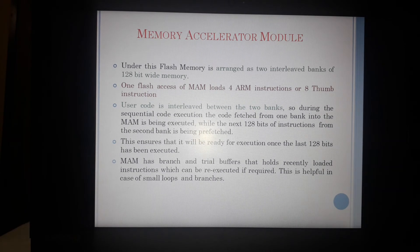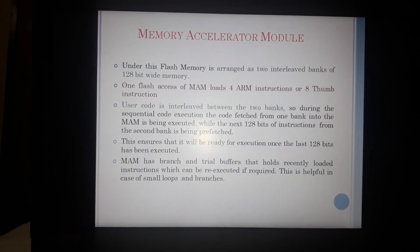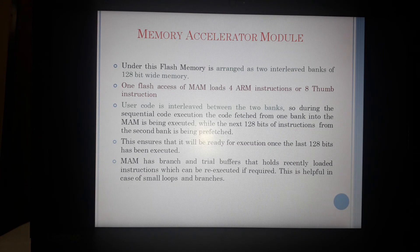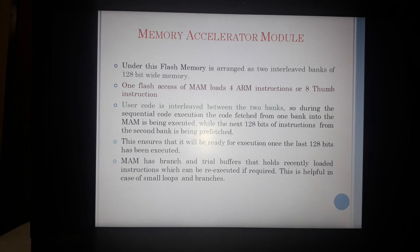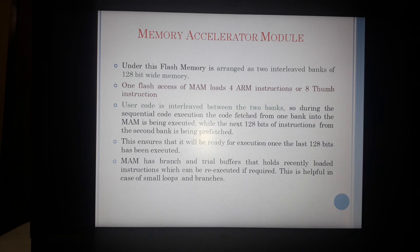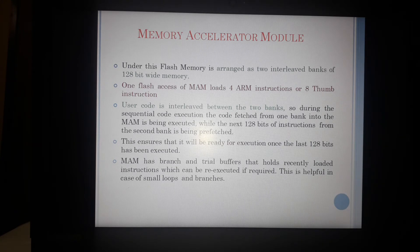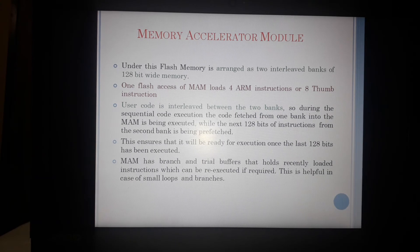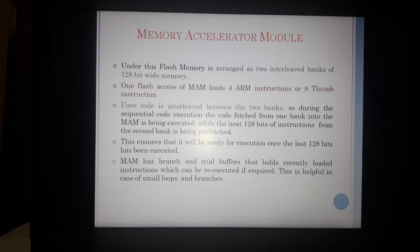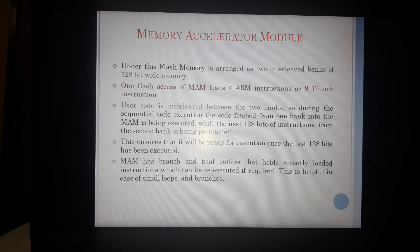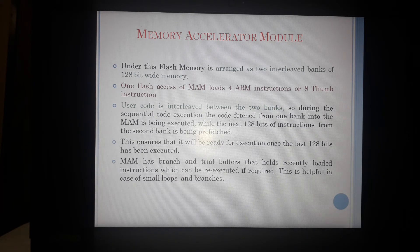And the width of the word size and the width of each location of this interleaved bank is 128 bits. If I divide 128 by 32, what do I get? It should come out to be 4. And I know each instruction of the ARM is 32 bit wide. So it means those 128 bits which comprise one word of the bank of flash memory, they are containing 4 ARM instructions or equivalently 8 thumb instructions, because thumb instruction size is 16 bits.